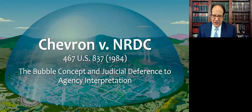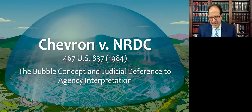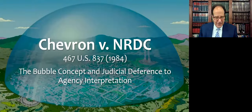I'm Drew Stevenson, and this is a lecture about the administrative law case Chevron versus NRDC from 1984 from the U.S. Supreme Court. This is a case about what we call the bubble concept and judicial deference to agency interpretation. This is one of the most important cases in all of your administrative law course — arguably the most cited U.S. Supreme Court case about administrative law, and one of the most cited about any area of law. It's very important in changing the landscape of judicial deference to agency interpretations.